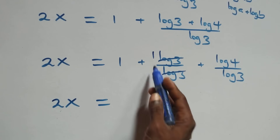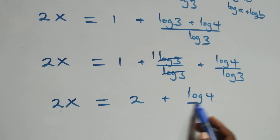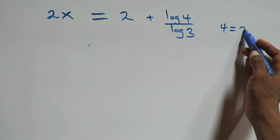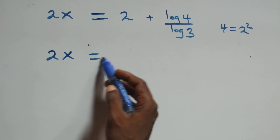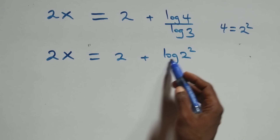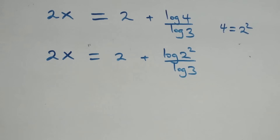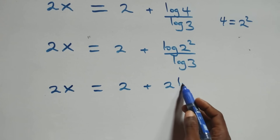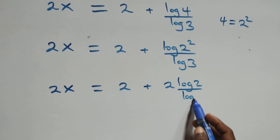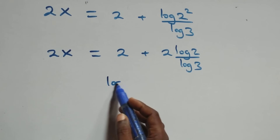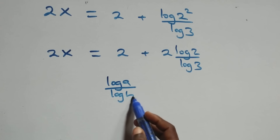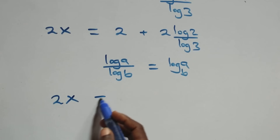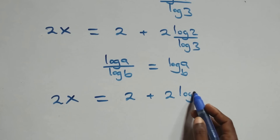2x equals to 1 plus 1 plus log 4 over log 3. Then, 4 can be written as 2 times 2, that is 2 squared. So we have 2x equals to 2 plus log 2 squared over log 3. We apply the power rule of logarithm — the 2 comes down — giving 2x equals to 2 plus 2·log 2 over log 3. We then apply the change of base rule: log a over log b is the same thing as log a to base b. So we have 2x equals to 2 plus 2·log₃2.